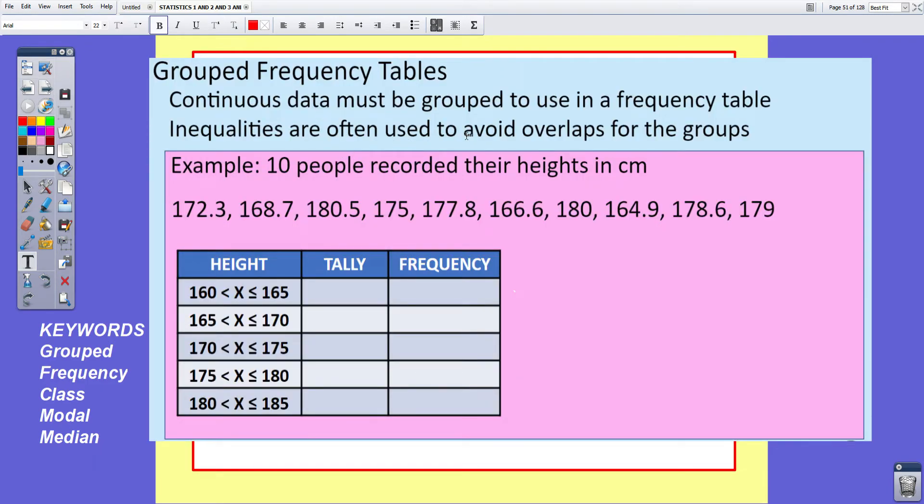Continuous data must be grouped to use in a frequency table. Inequalities are often used to avoid overlaps for the groups. Let's see exactly what we mean by inequalities. This is a grouped frequency table and here's the data that we're going to have to record. 10 people recorded their heights in centimeters. If we group the data into groups 160 to 165, 165 to 170 and so on, we can find a place to put each of these. But it's the inequalities that I want to talk about first.